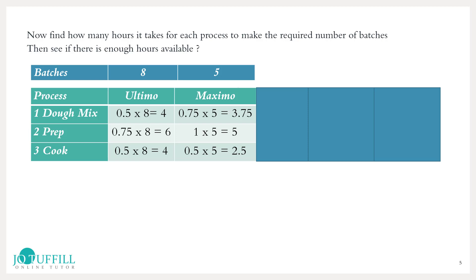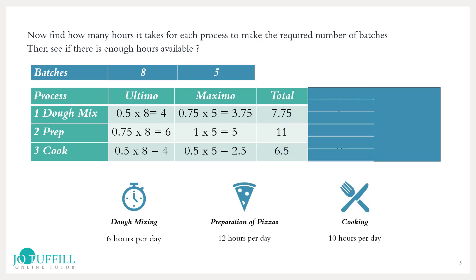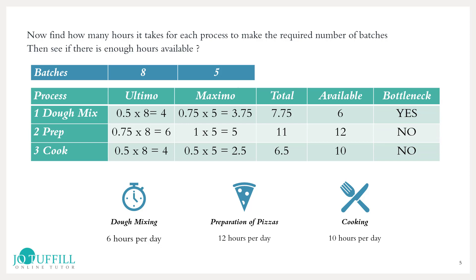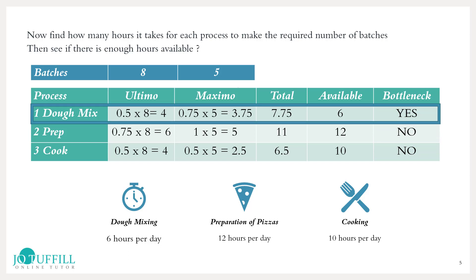Dough mixing for Maximo takes 3.75 hours. Prep and Cook respectively take 6 and 4 hours for Ultimo, and 5 and 2.5 for Maximo. We then total them up. The available hours from before were 6, 12, and 10. Therefore the bottleneck is dough mixing, because there are not enough hours available to cover the 7.75 hours needed to make 8 batches of Ultimo and 5 of Maximo. Prep and Cook have enough time, so they are not the bottleneck.